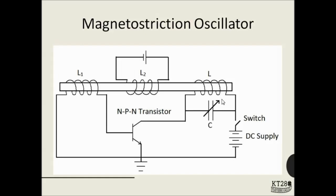The frequency of the current flowing through the tank circuit is given by the formula f equals 1 upon 2π times the square root of LC, where L is the inductance of the coil and C is the capacitance of the capacitor — you have learned this in 12th standard. This is the resonant frequency.